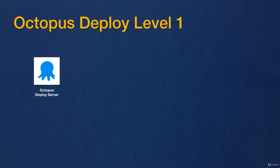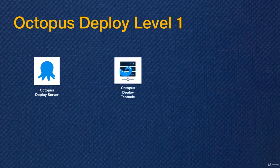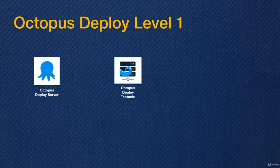Just like TeamCity, Octopus Deploy has a server for maintaining deployment projects, users, and environment information. What actually does the work is the Octopus Deploy Tentacle — essentially an agent, similar to a TeamCity build agent. The Octopus Server communicates with the Tentacle to perform tasks. There are two types of Octopus Deploy Tentacles.